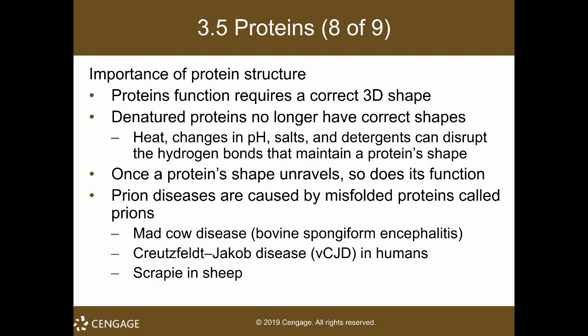One important thing to remember about proteins is that the structure of the protein dictates its function — they are very closely related. If the structure is lost, the function of the protein is also lost. An example is albumin, the protein found in egg whites. The egg white is translucent when raw, but if you apply heat, the albumin denatures and you get an opaque white color.